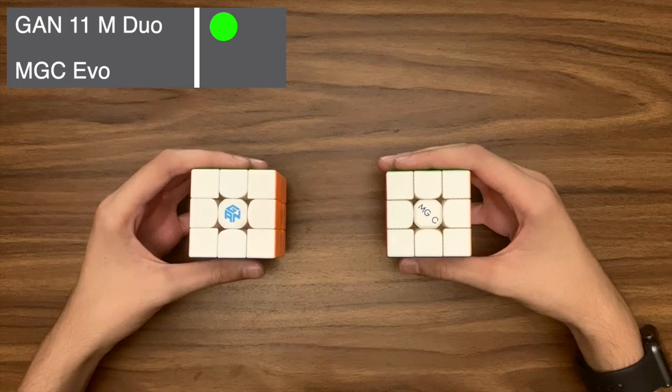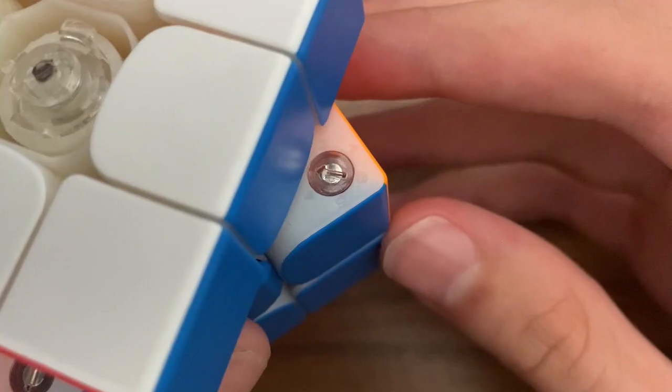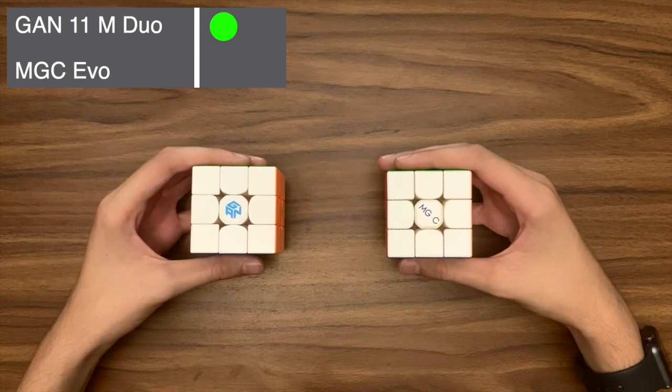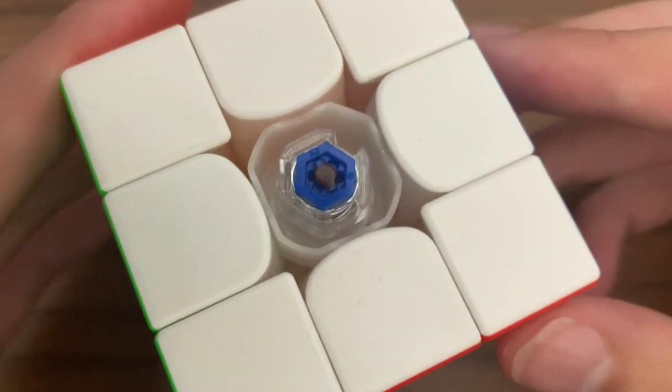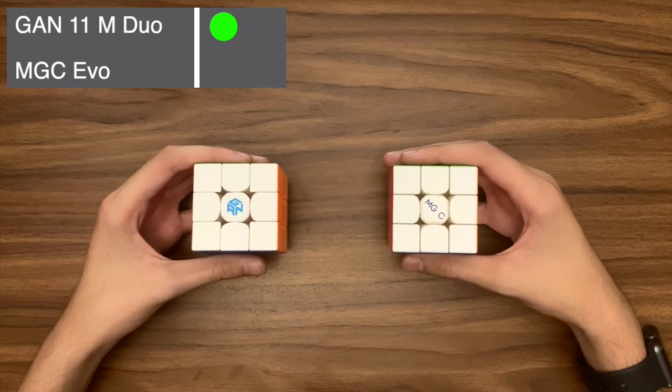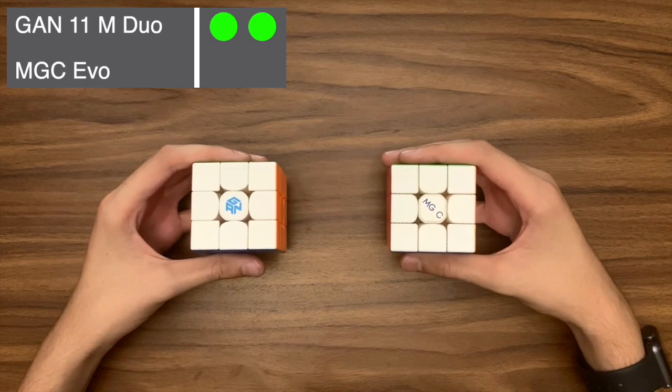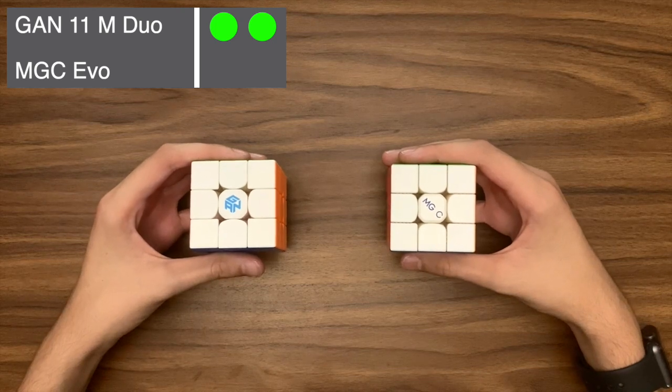Next, we have customization. The MGC Evo has a tensioning system and adjustable magnets. However, it isn't very easy to use. And I think the GAN tensioning system is so much better. So the Duo wins this category. Even though it doesn't have customizable magnets, the tensioning system is just amazing.